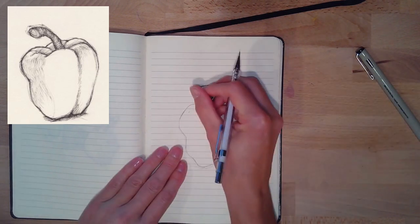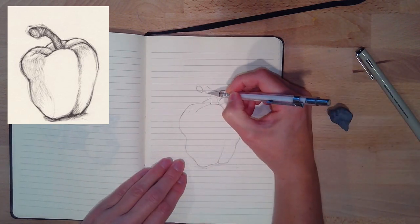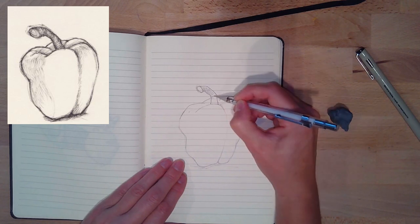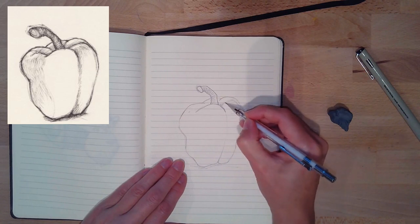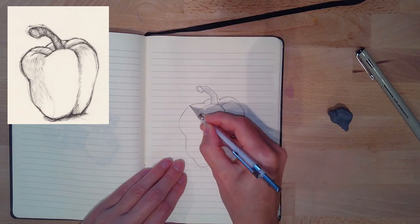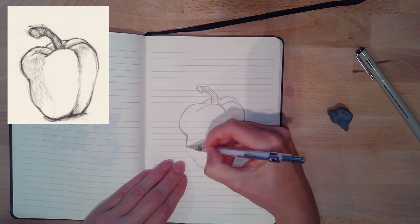Now the stem starts dead center. What I looked at is where does the left side of the stem and the right side of the stem start and finish, and then the very tip of the stem. If I dropped that down, where would that stop?